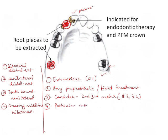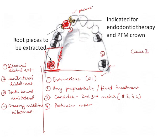Rule Number 5 — consider the posterior-most edentulous area. Of areas one, two, and three, area one is the posterior-most, extending posteriorly. This is a unilateral edentulous area with no posterior tooth missing, so this is Kennedy's Class 2.